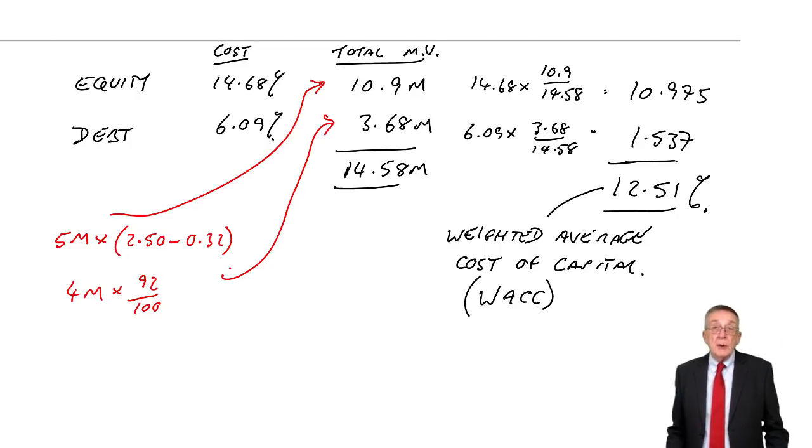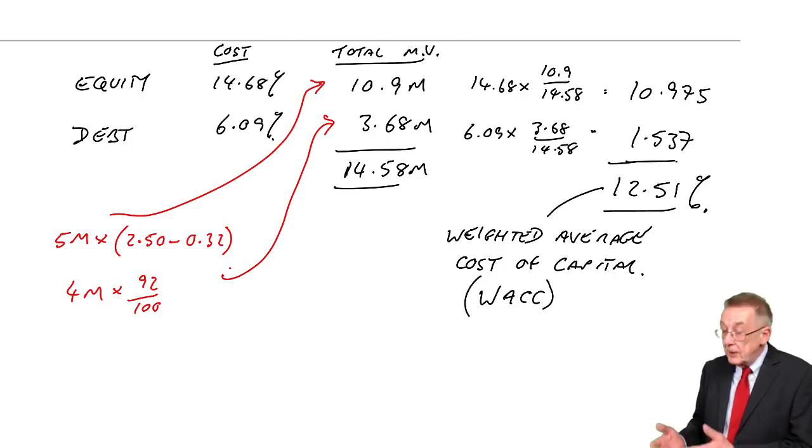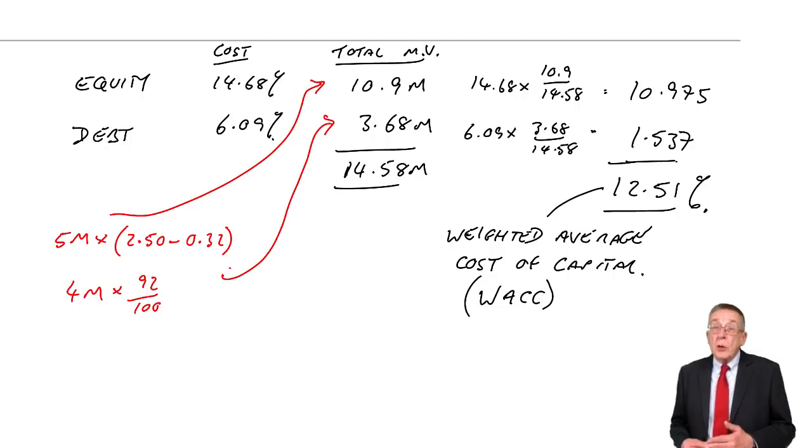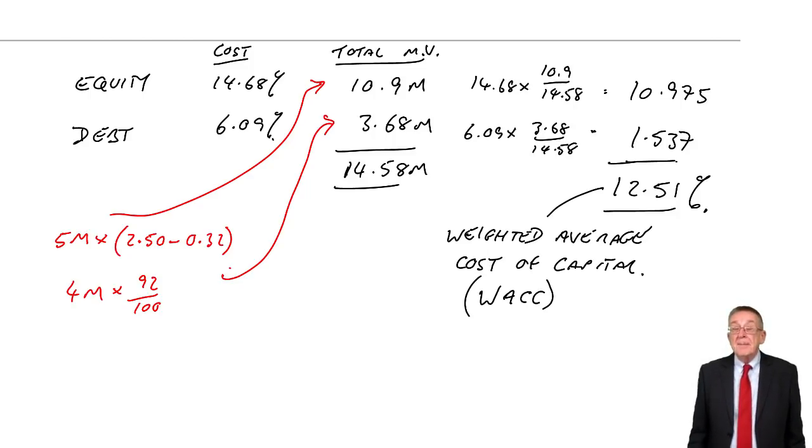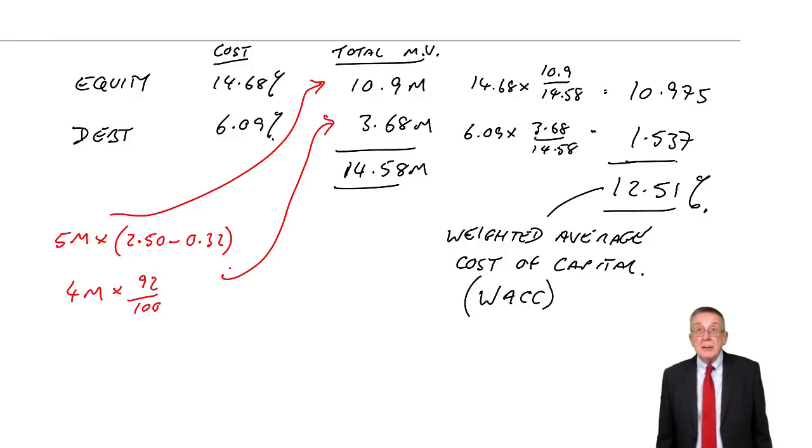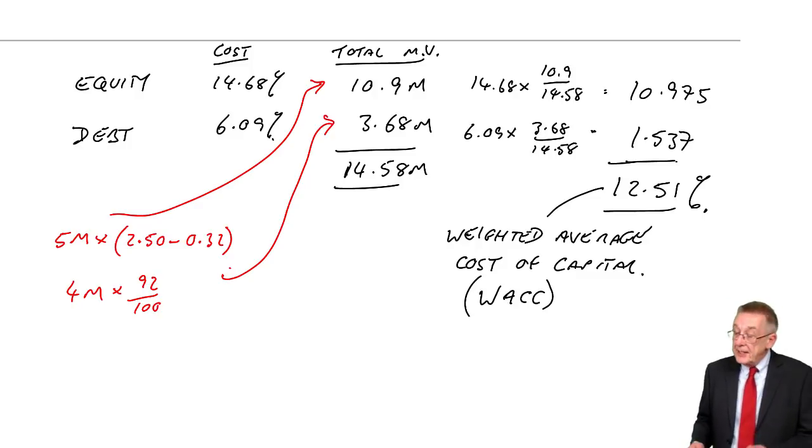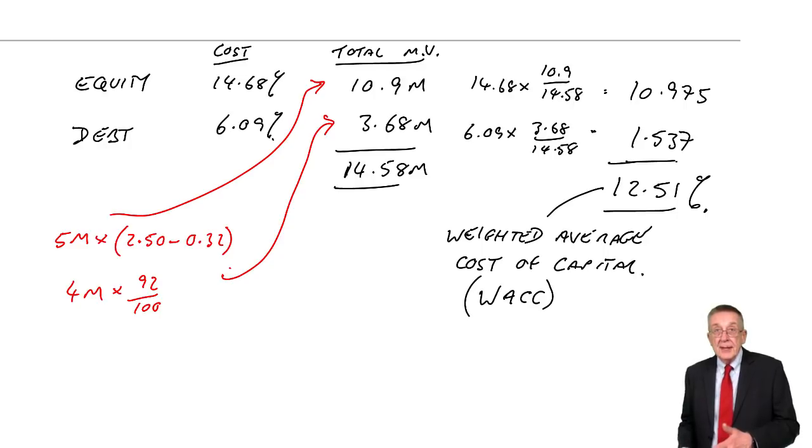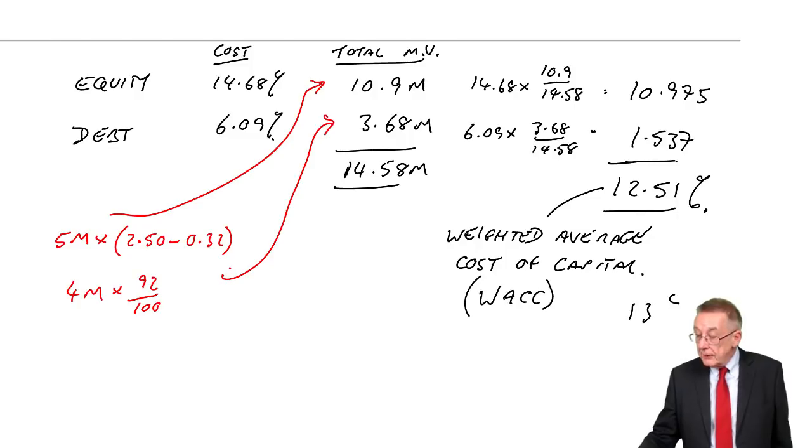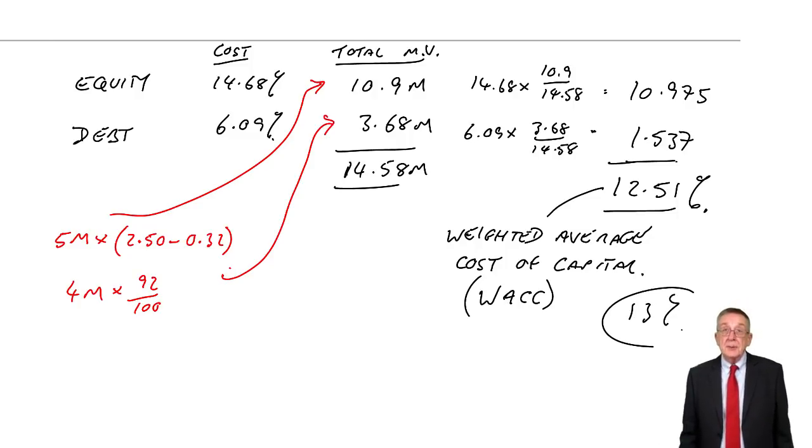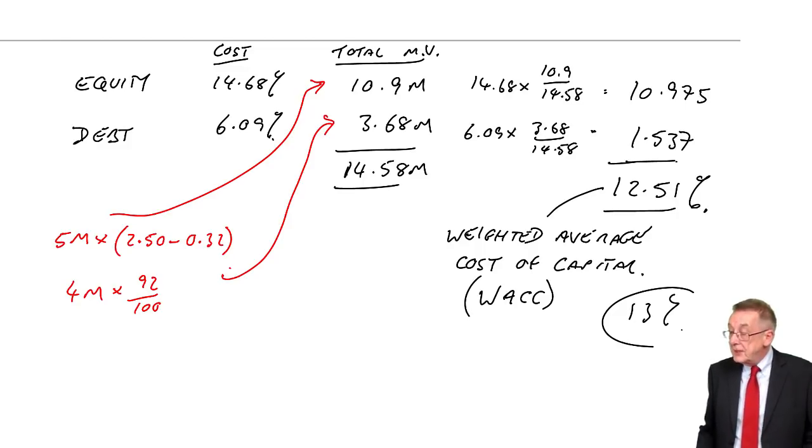Don't panic about discounting at 12.51. If you're asked to calculate the weighted average cost of capital, do it to two decimal places, so 12.51. If he required you to do any discounting, he always expects you to use tables, you discount at the nearest whole percentage. So you're working to 12.51, but it's slightly near 13. If you were required to discount, you'd use the tables at 13%. That's the next chapter.